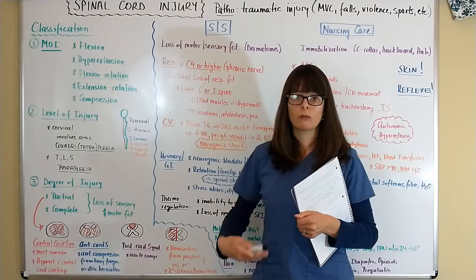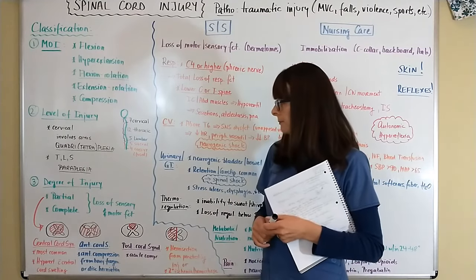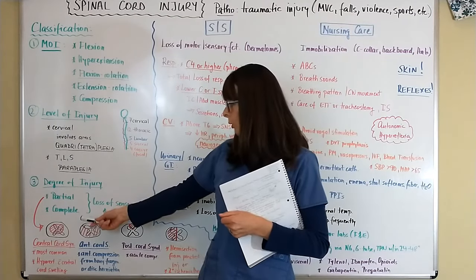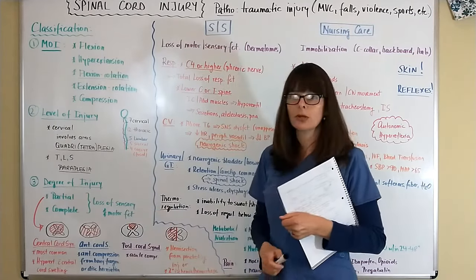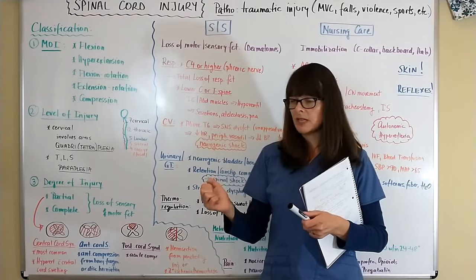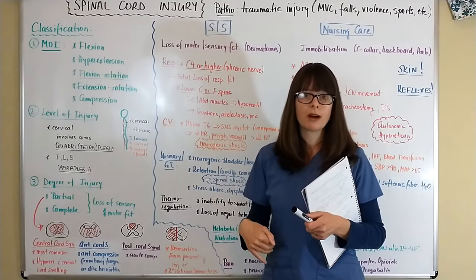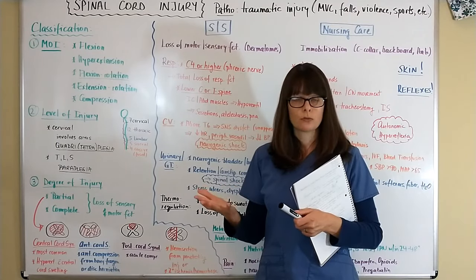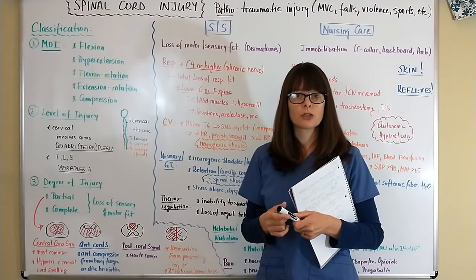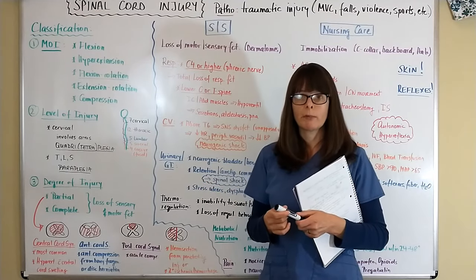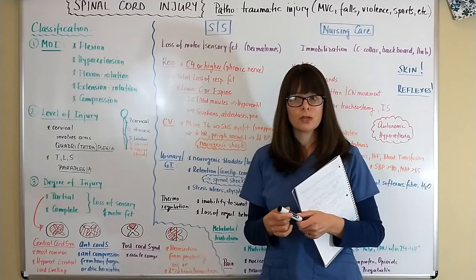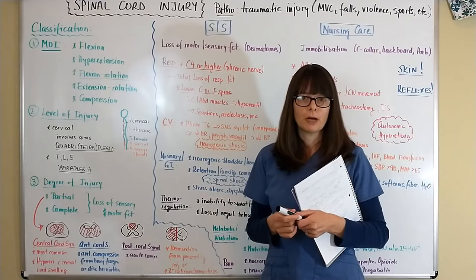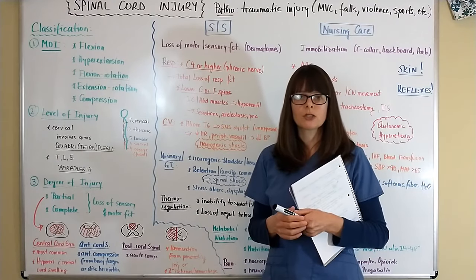Injuries to the thoracic, lumbar, and sacral areas will usually result in paraplegia, where only the lower extremities are involved. Regarding degree of injury, it can be a partial or complete loss of sensory and motor function. Every part of the body has sensory and motor innervation that allows us to feel and contract musculature, and depending on the level and severity of injury, motor and/or sensory function might be impaired.